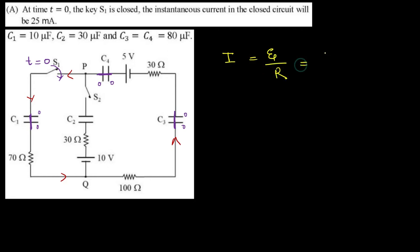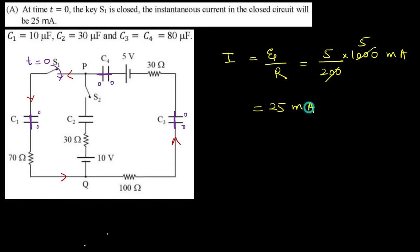With capacitors replaced by conducting wires, the closed circuit now has only the battery and resistors. We have 30 ohm, 100 ohm, and 70 ohm — their total resistance is 100 + 70 + 30 = 200 ohm. The current in this closed circuit is i = EMF / net resistance = 5 volt / 200 ohm = 0.025 ampere, which is 25 milliampere. So Option A is correct.